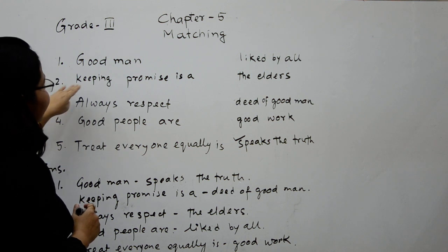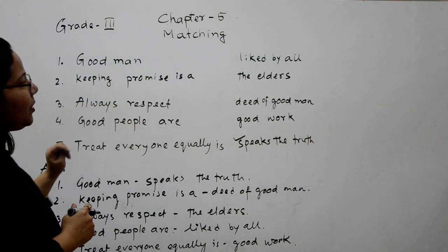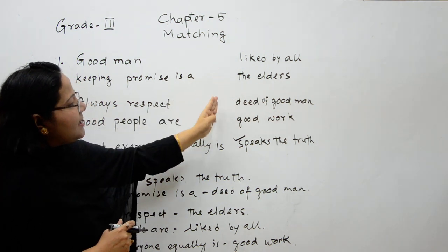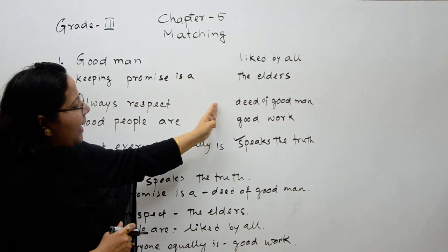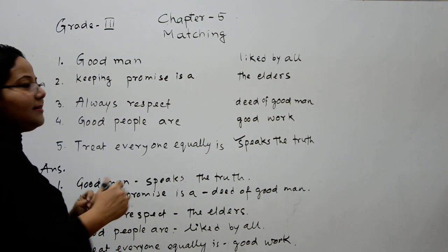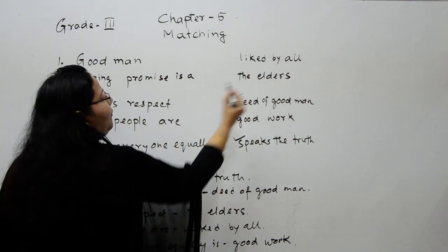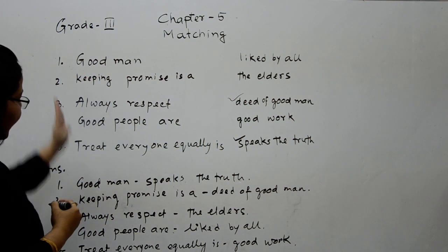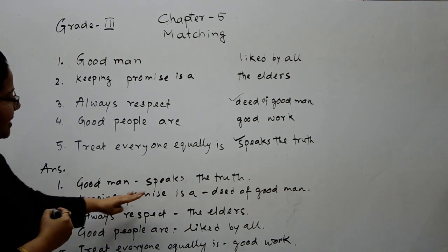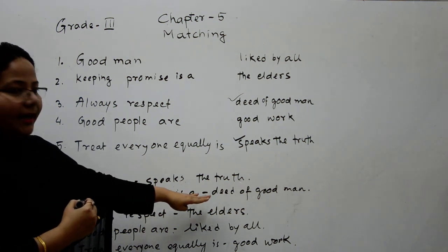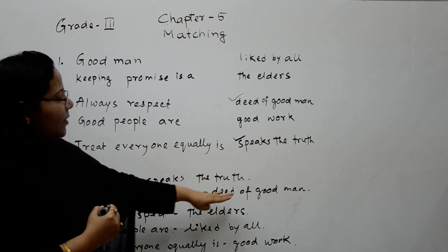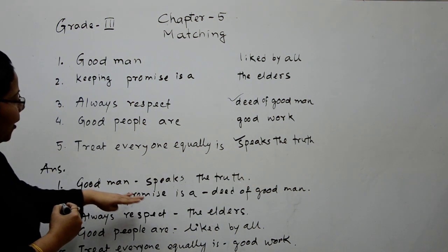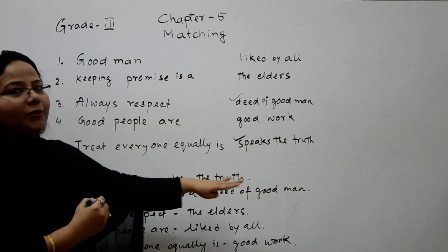Then the second one: 'keeping promises.' The options are 'liked by all,' 'the elders,' 'deed of good man,' 'good word.' What is your answer? The answer is 'deed of good man.' So you write the left side: keeping promises — give one small hyphen — deed of a good man. So your answer is: keeping promise is a deed of good man.